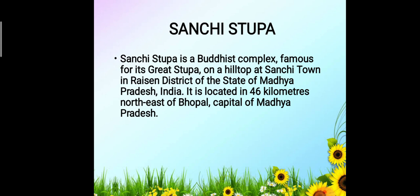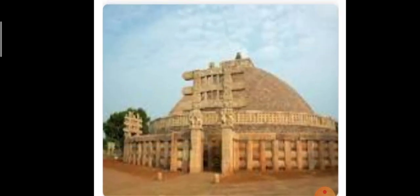Sanchi Stupa is a Buddhist complex famous for its great stupa, on a hilltop at Sanchi town in Raisen district of Madhya Pradesh, India. It is located 46 kilometers northeast of Bhopal, the capital of Madhya Pradesh. It was built by King Ashoka the Great. It is known for its spectacular gateways and pillars carved out of rocks and polished metal, with beautiful pictures of animals, birds and floral decorations.